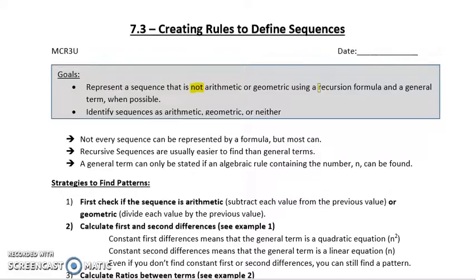If you remember, a recursion formula is a formula where something is dependent on the previous term and then continues on and on. A general term is something that you can find the value of directly. Then we want to identify sequences as arithmetic, geometric, or neither. Those are the two things we want to include here.